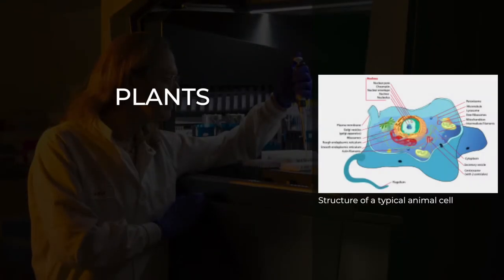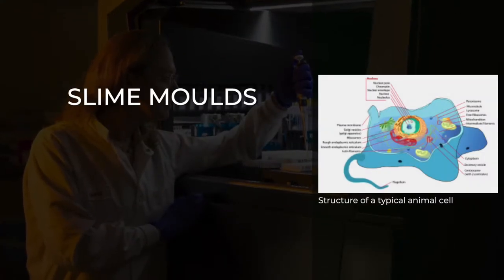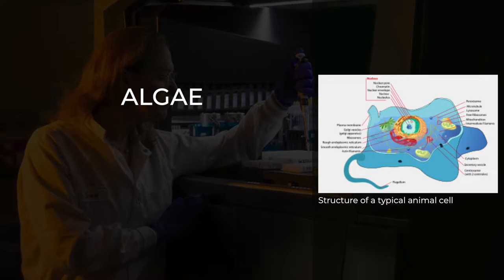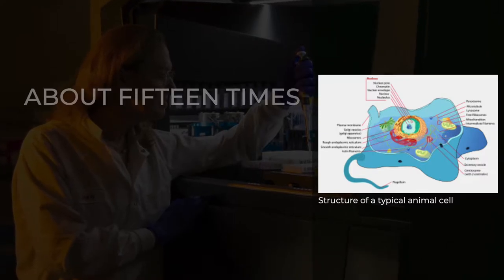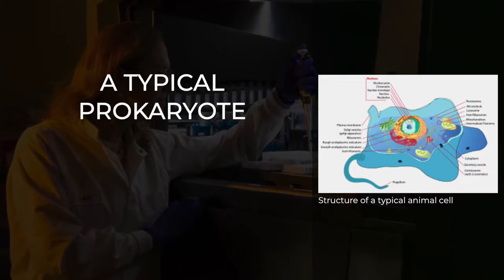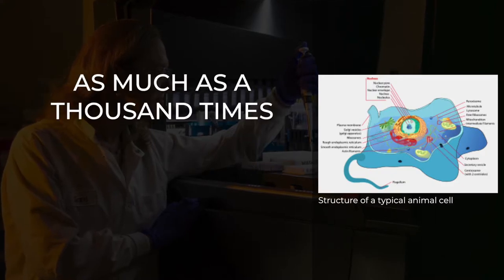Plants, animals, fungi, slime molds, protozoa, and algae are all eukaryotic. These cells are about 15 times wider than a typical prokaryote and can be as much as a thousand times greater in volume.